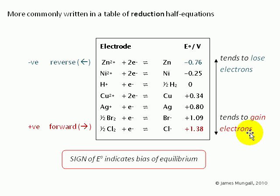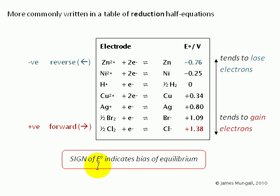For positive values, these indicate half cells which tend to gain electrons. And so in terms of the reduction half equations, the equilibrium would tend towards the right, or in the forward direction. This leads to a rather useful shortcut in thinking: the sign of E⁰ indicates the bias of the equilibrium. It's time to look at how to use these standard electrode potential values to predict cell EMFs without actually performing an experiment.